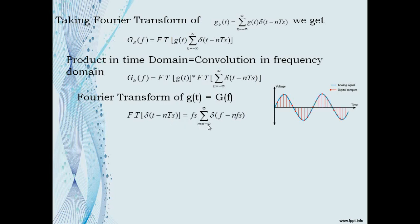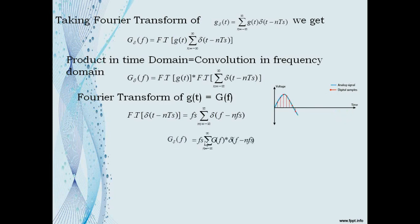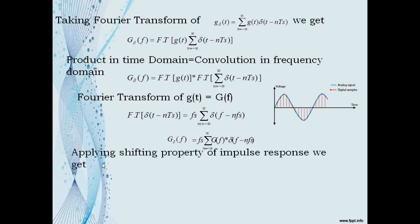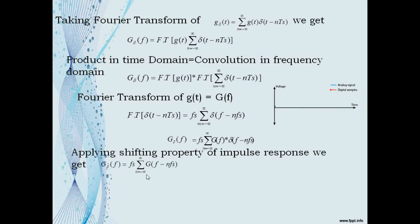The Fourier transform of δ(t − nTs) equals Fs · Σ (n = −∞ to ∞) δ(f − nFs). Therefore G_δ(f) = Σ (n = −∞ to ∞) G(f) * δ(f − nFs). Applying the shifting property of the impulse response, we get G_δ(f) = Σ (n = −∞ to ∞) G(f − nFs).